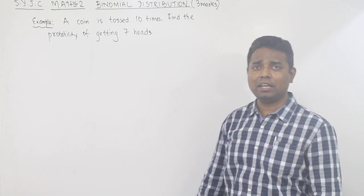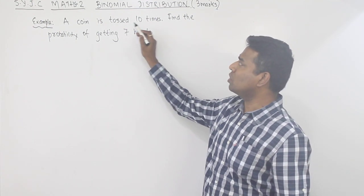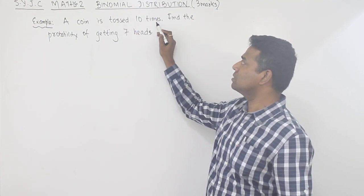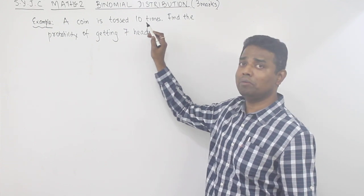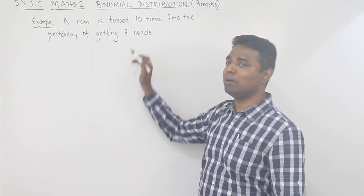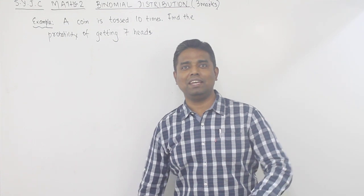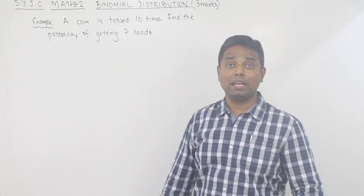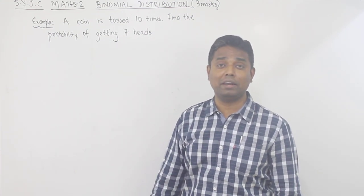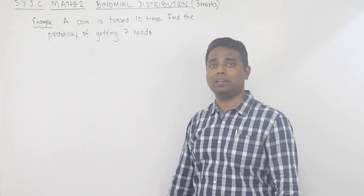I have written an example. A coin is tossed 10 times. Find the probability of getting 7 heads. This is a probability question — you have to find the probability.